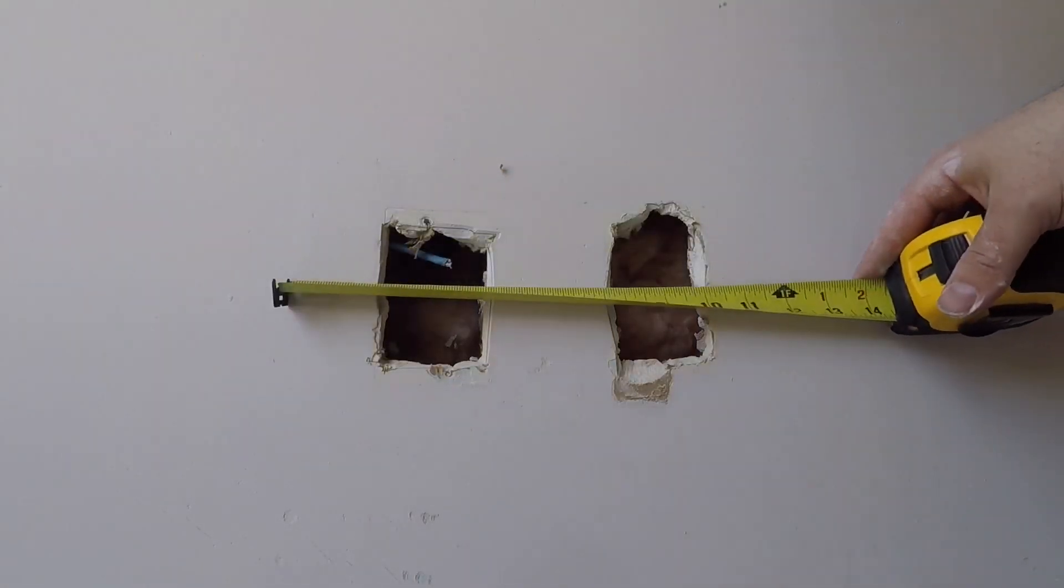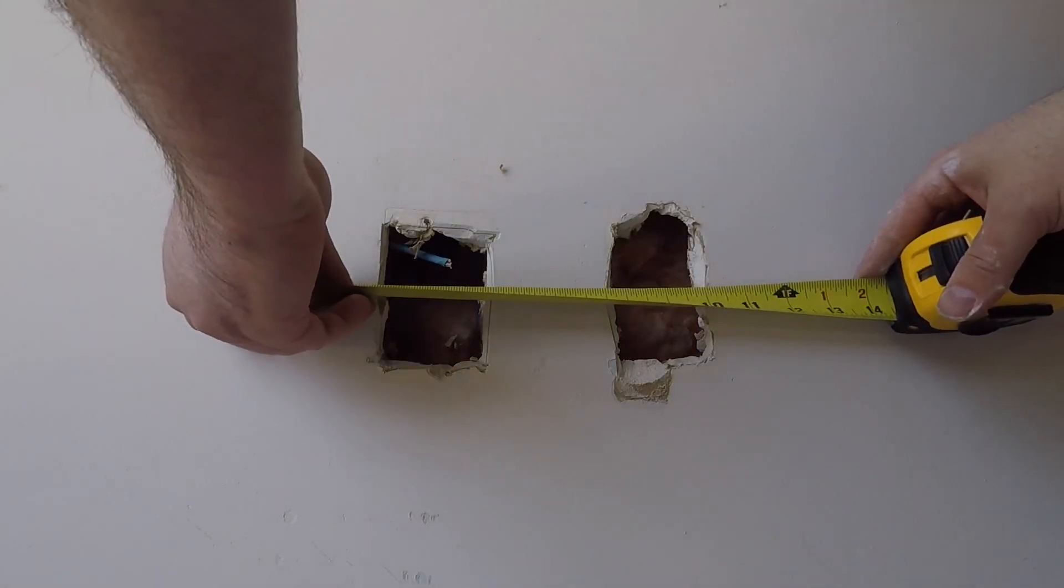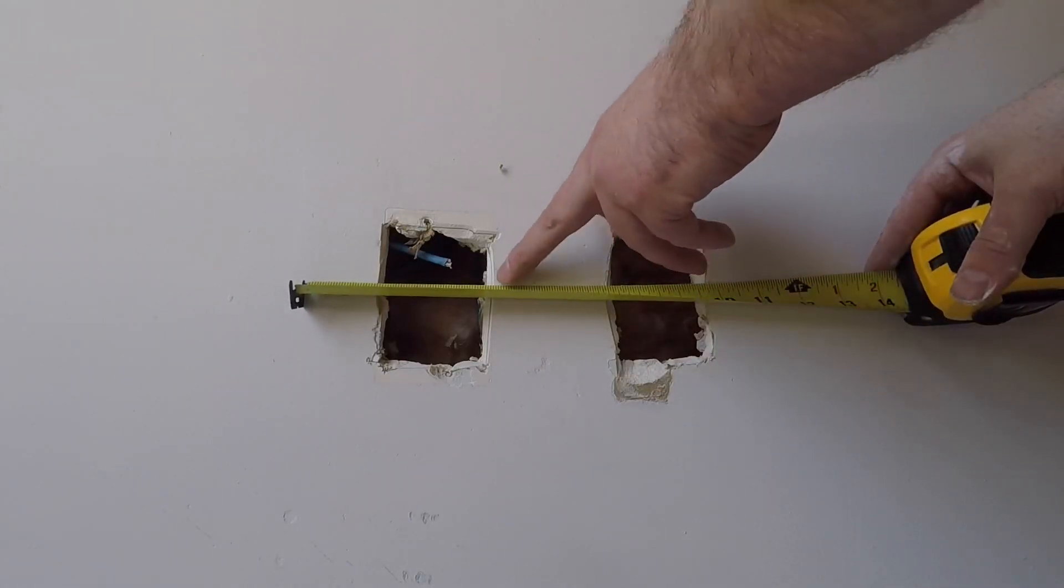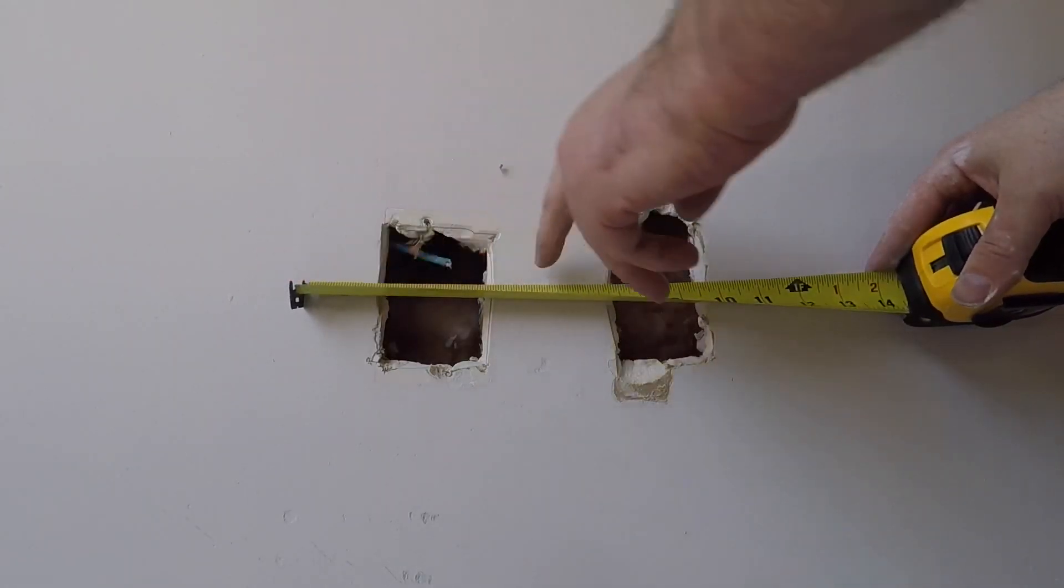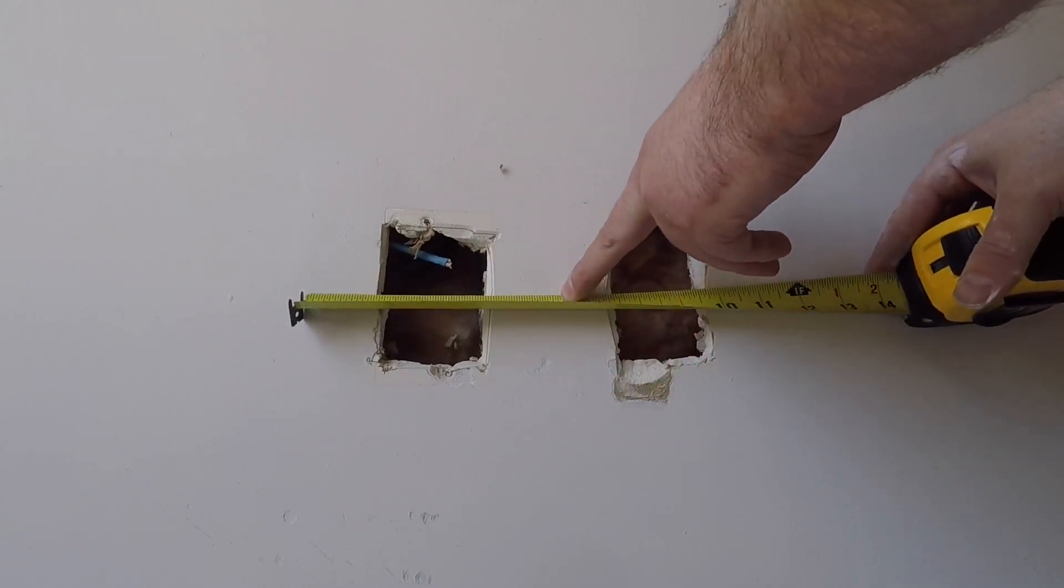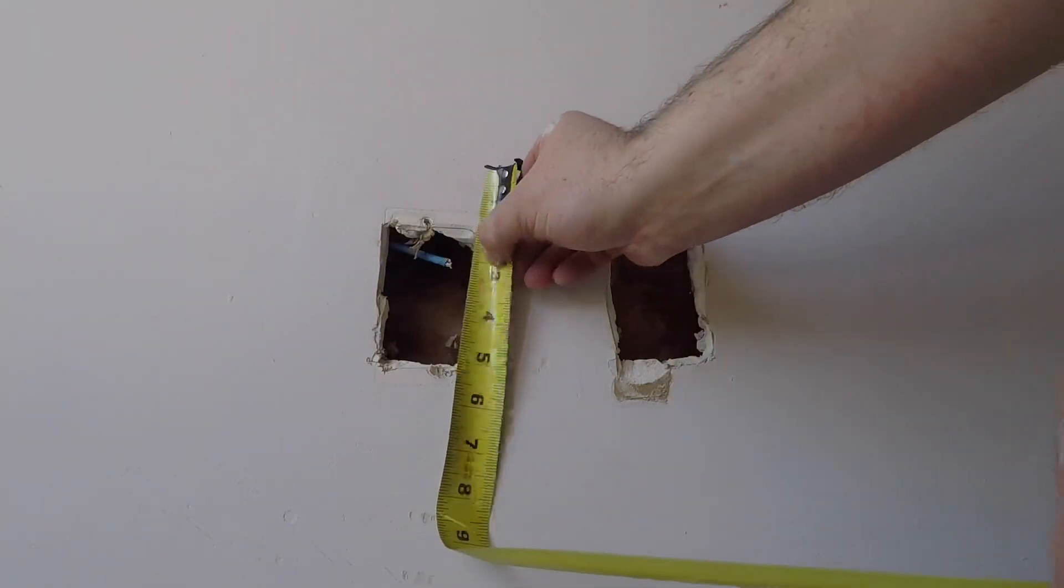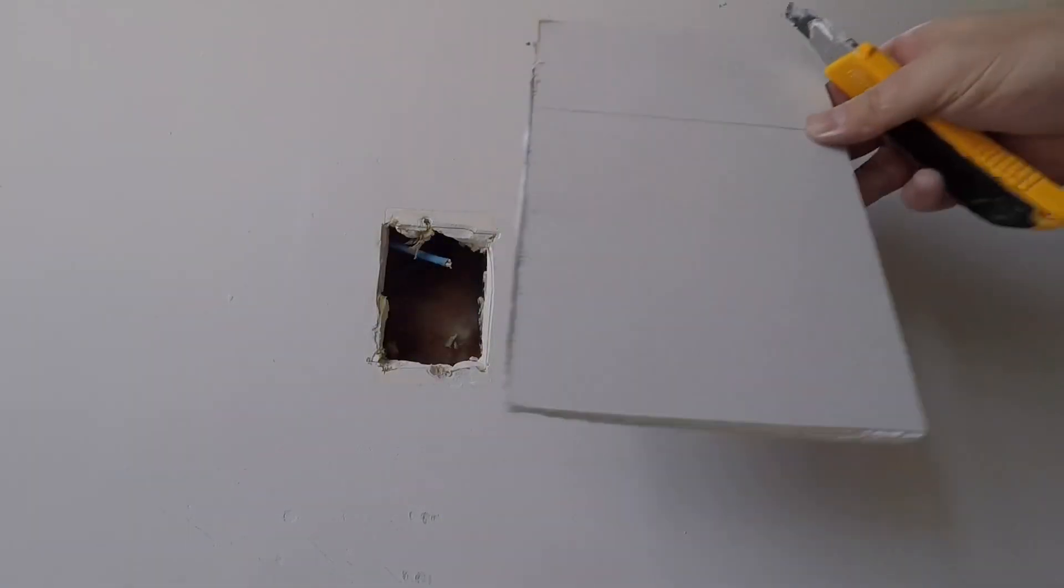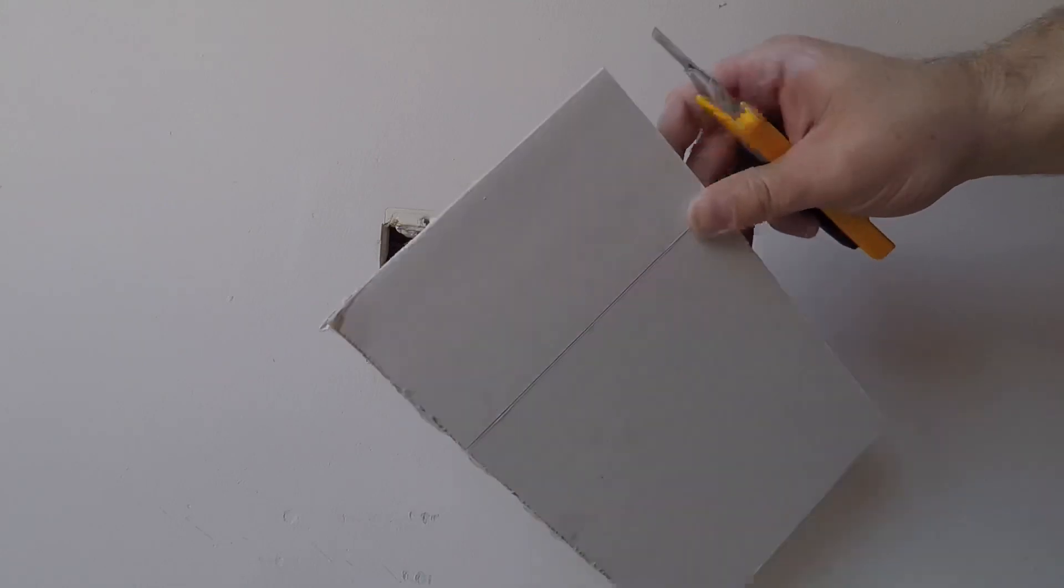Now what you're going to do is if you're cutting a big piece of drywall you can just measure it out so you know roughly what to measure out. You want to go about an inch and a half past the hole all the way around. So I'm going to cut a piece at six and six.